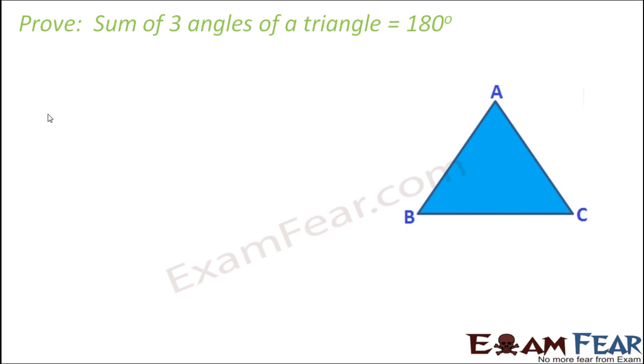So now let us try to prove that the sum of three angles is always equal to 180 degrees. Let's assume that we have a triangle ABC. Our aim is to prove that angle one plus angle two plus angle three is equal to 180 degrees. Let's name these angles as angle 1, angle 2, and angle 3.